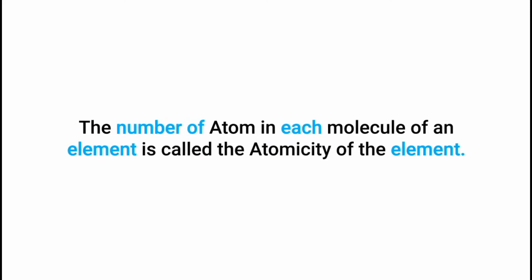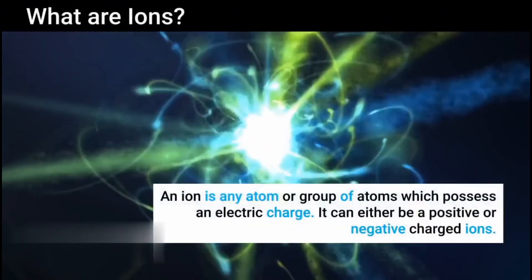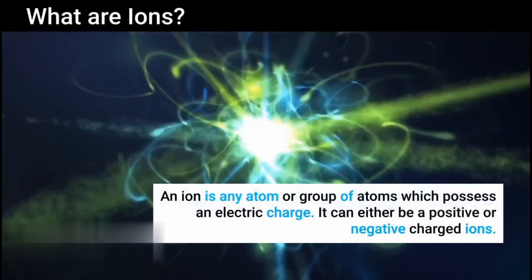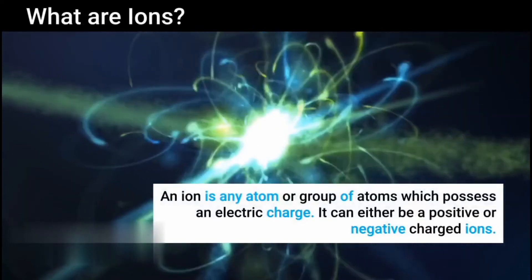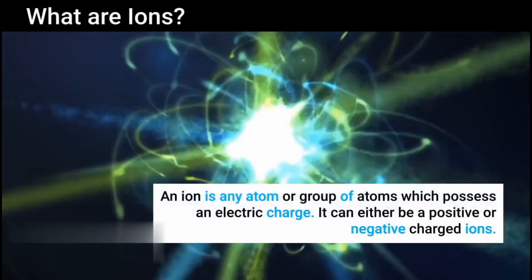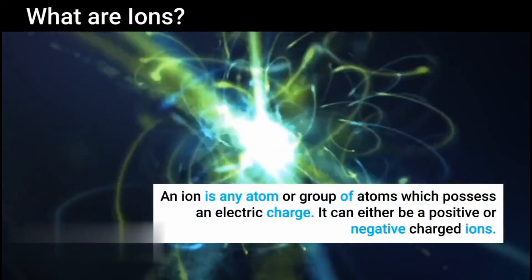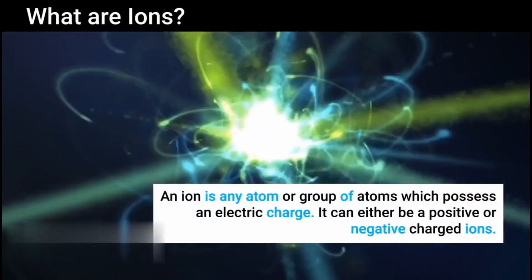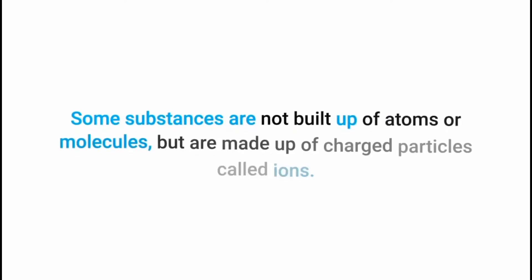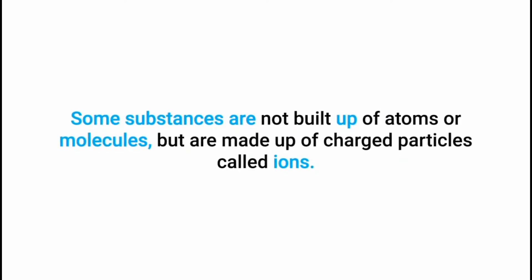Now let's talk about ions, which is the third one. An ion is a group of atoms which possesses an electrical charge. It can either be a positive or negative charge, which are the two types of ions. Some substances are not built up of atoms or molecules but are made up of charged particles.